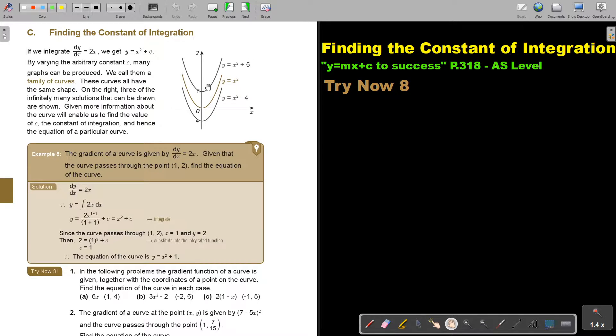And hence the whole equation of a particular curve. So if the value of c is 5, it will cut there. If the value of c is 0, it will cut at the origin. And if the value of c is negative 4, it will cut there. But let's look at an example.